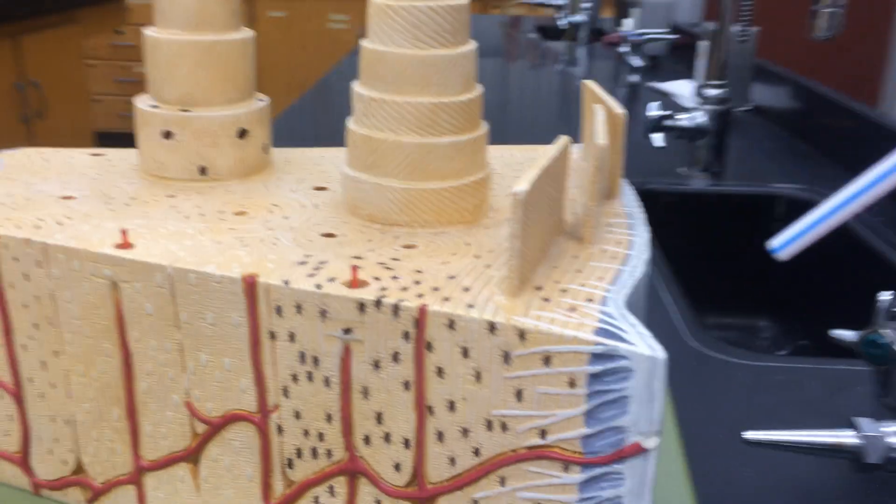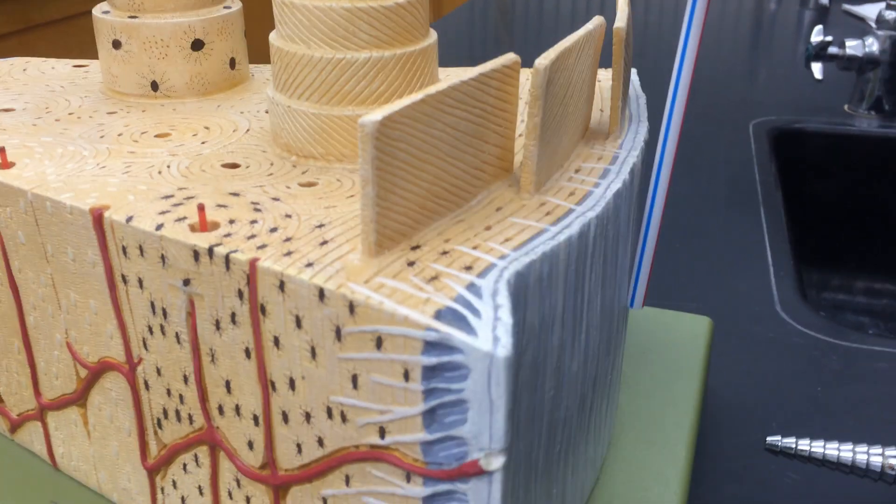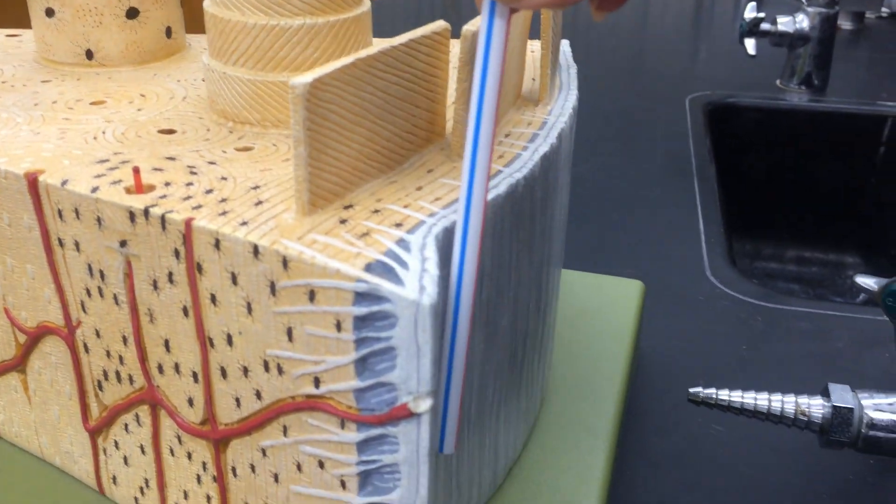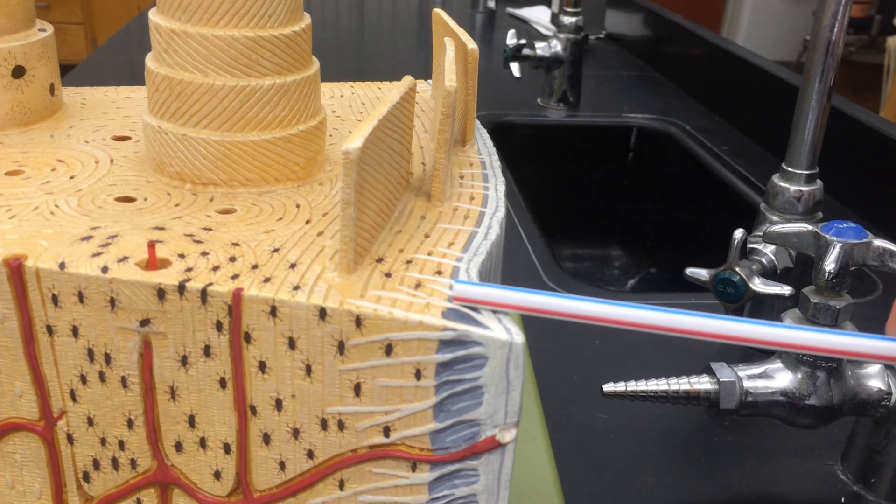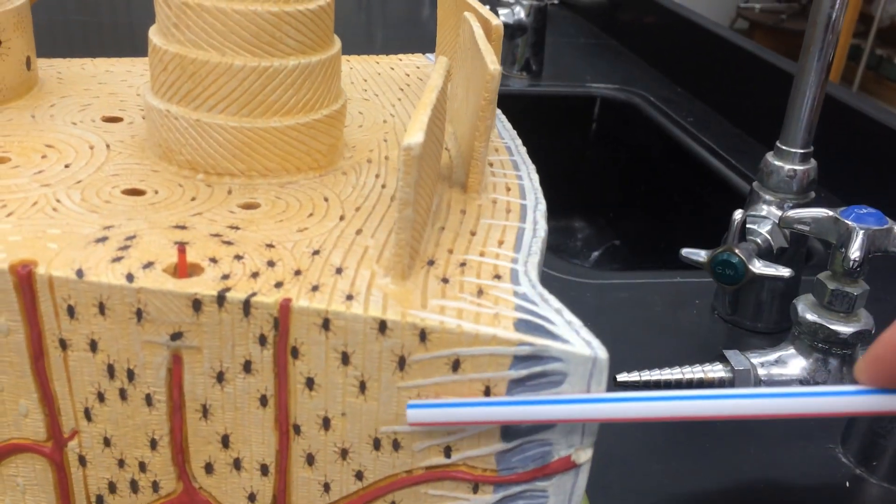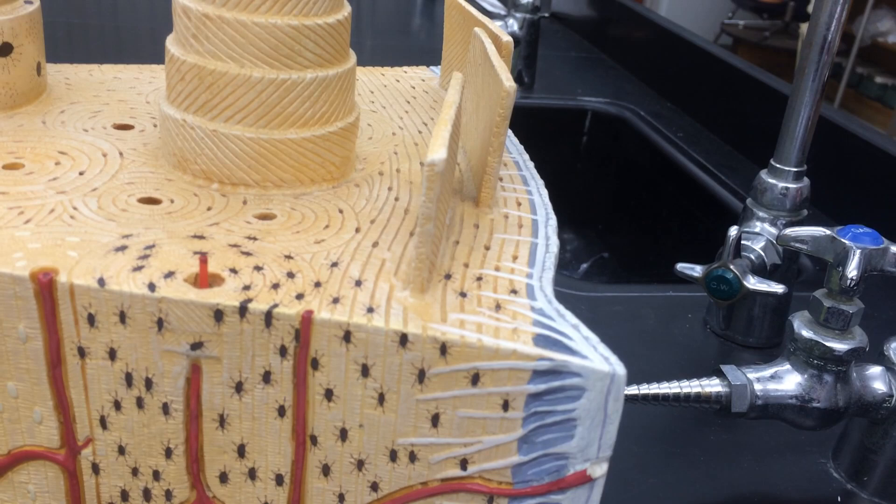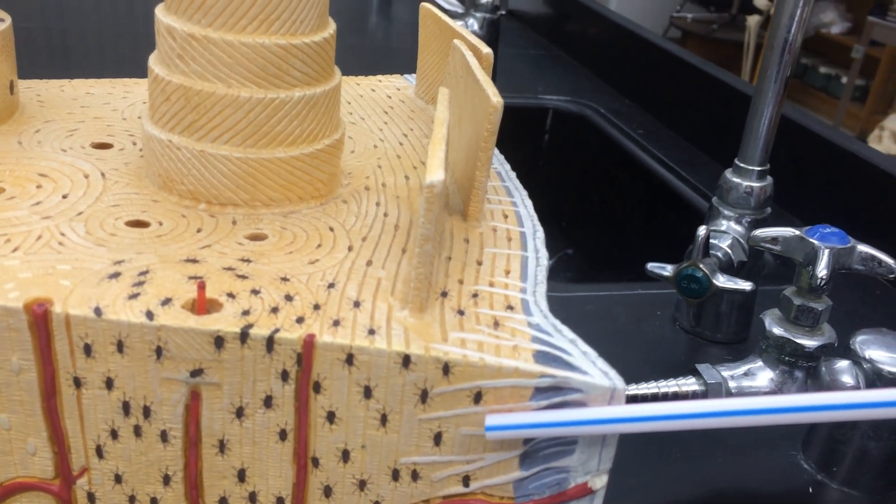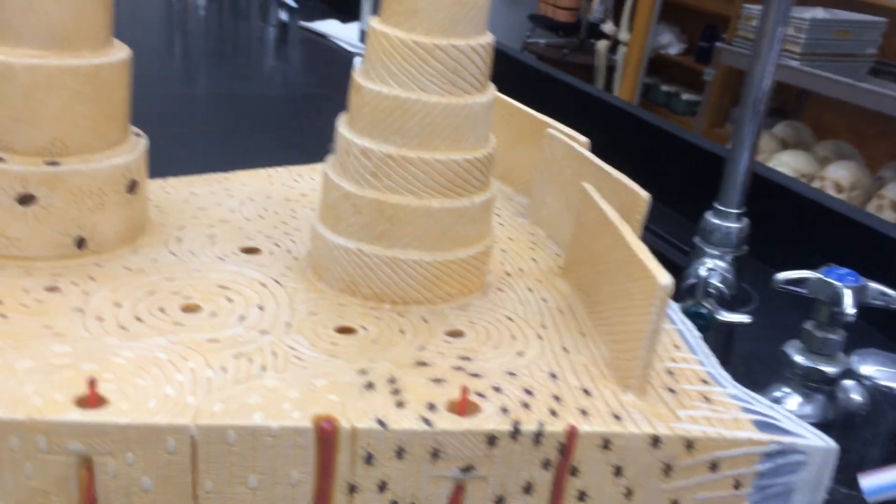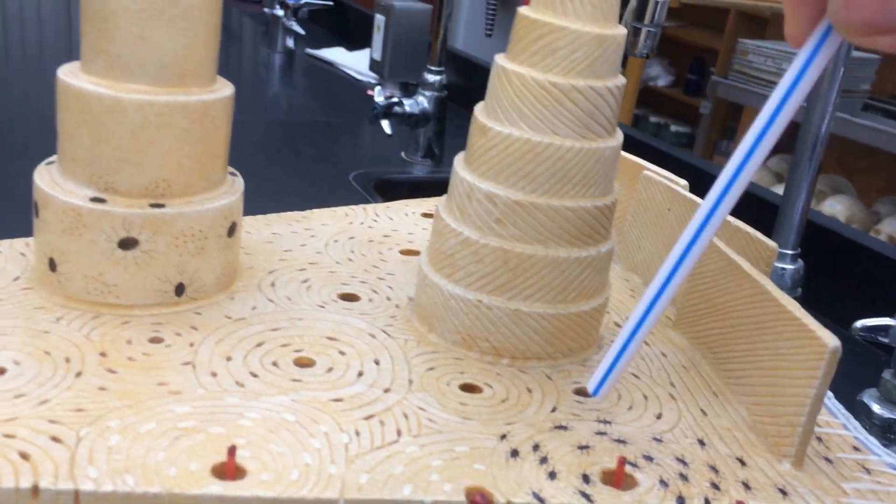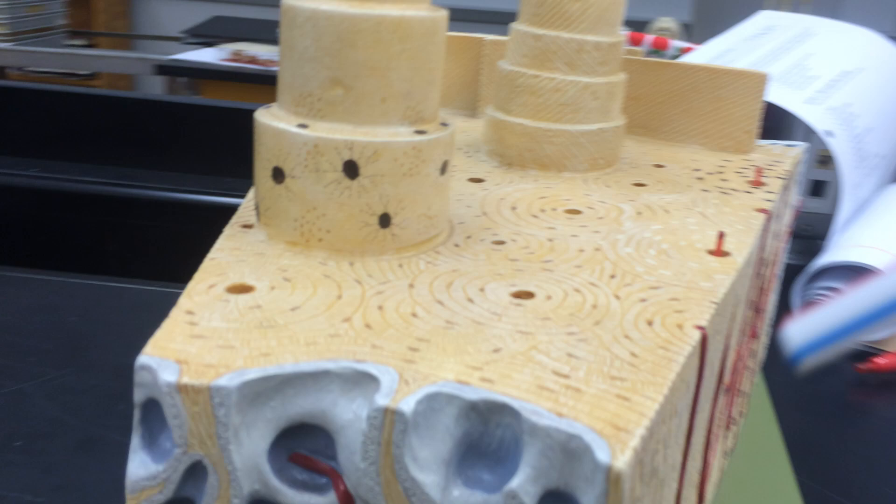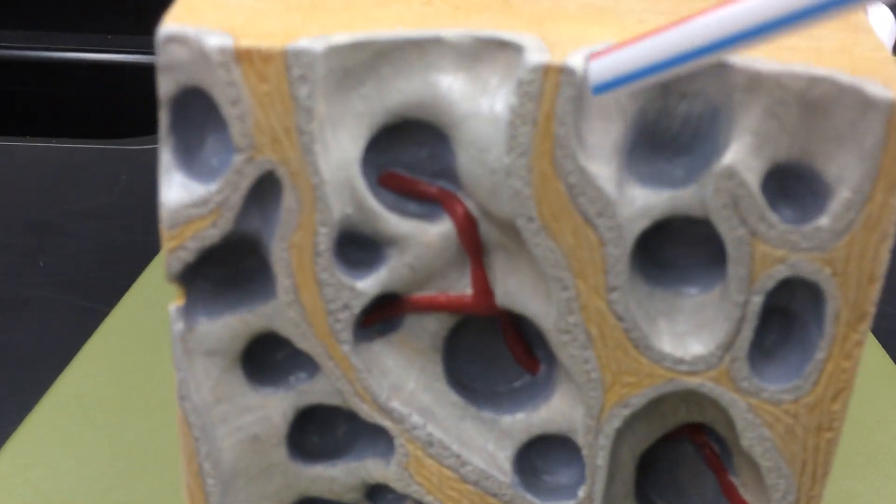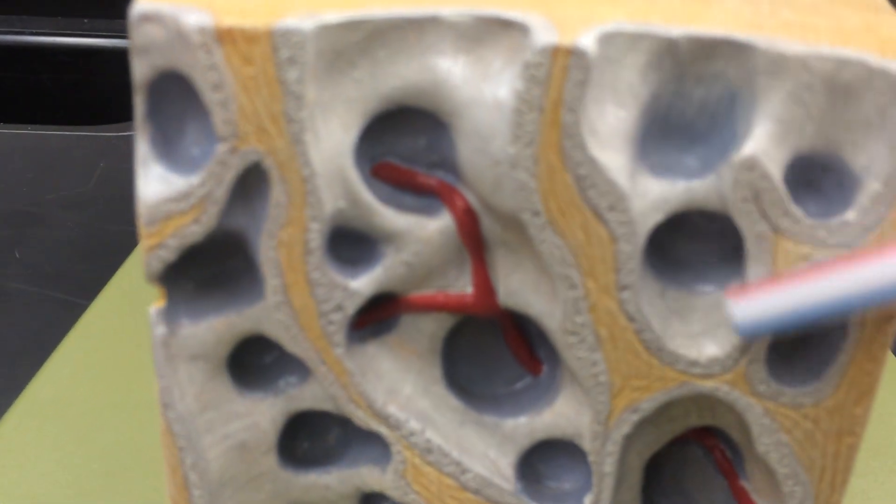Notice that the compact bone is surrounded by a membrane known as the periosteal membrane which must be attached by Sharpie's fibers or perforating fibers. These fibers are made up of a very important molecule known as collagen. The membrane that surrounds the spongy bone is known as the endosteal membrane.